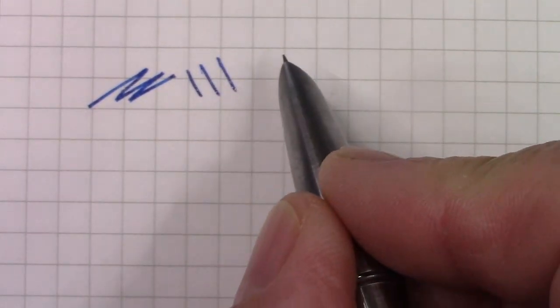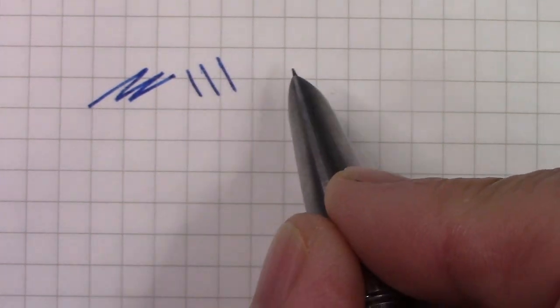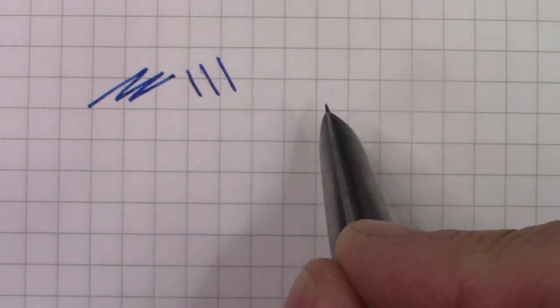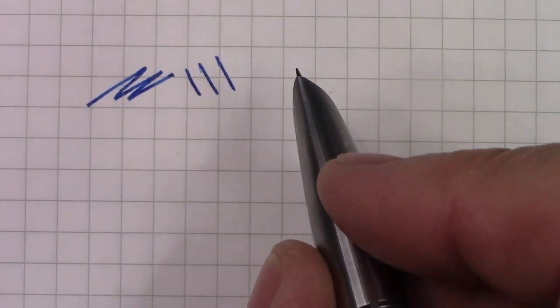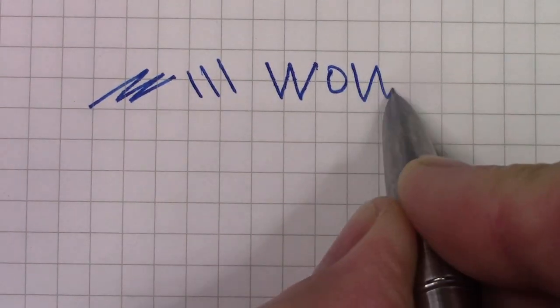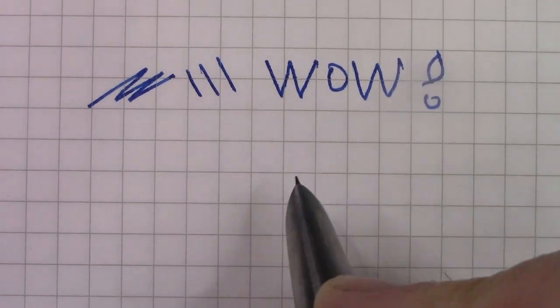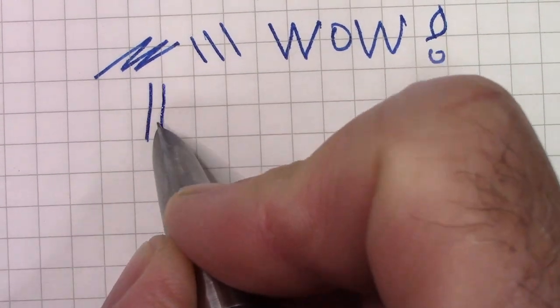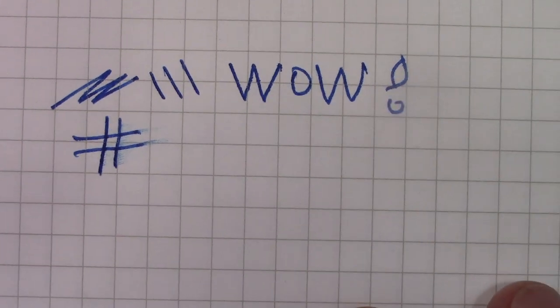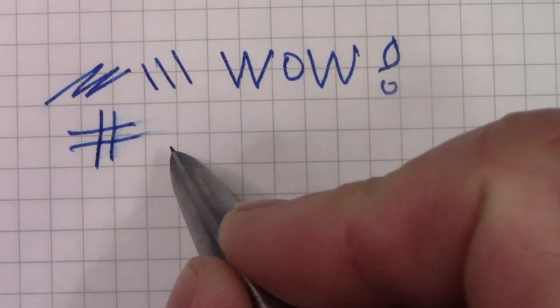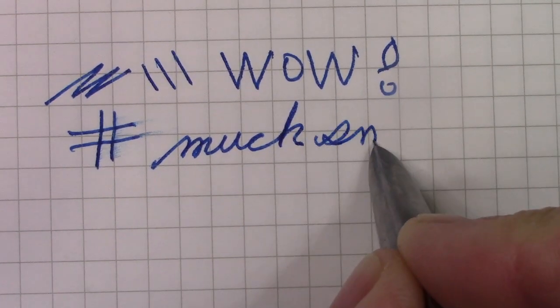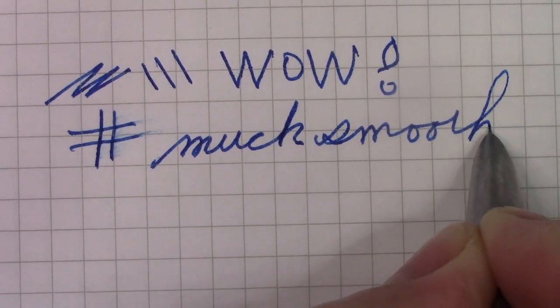So I mentioned smoothing the nib, so I did that. I used my nail board - coarse a little bit, medium, and then some fine - doing a whole bunch of things, rotating the nib a little bit. And now this nib is a wow hooded nib. It's still not wetter, but it is much smoother.